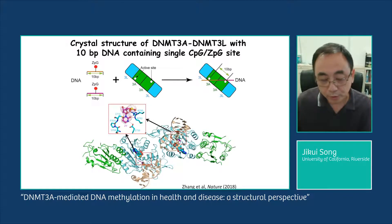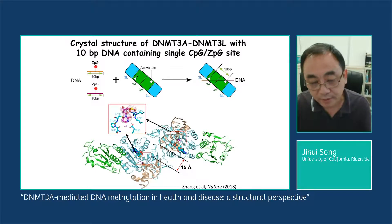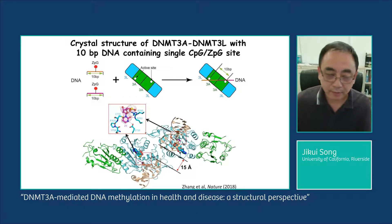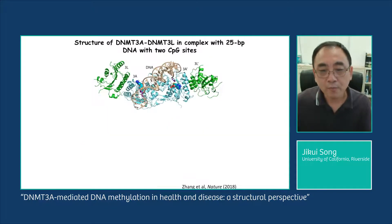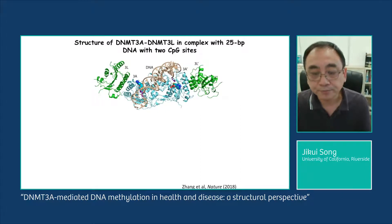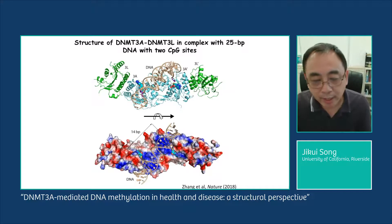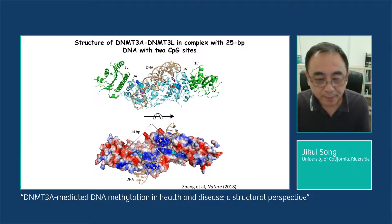However, surprisingly, we observed that the two ends of the short DNA duplex do not meet each other. Instead, they are separated by 15 Ångströms, equivalent to four base pairs of DNA. To fill in this gap, we designed another DNA duplex containing two separate CpG sites, allowing us to solve the structure of a covalent complex of DNMT3A in which the DNMT3A-DNMT3L tetramer bound to one single DNA duplex containing two separate CpG sites separated by 14 base pairs, rather than 10 base pairs as previously predicted.